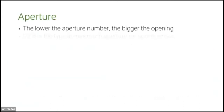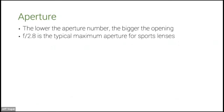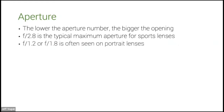The lower the aperture number, the bigger the opening. F2.8 is the typical maximum aperture for most sports lenses — all the lenses I own are 2.8 as large as they go. You'll often see F1.2 or F1.8 on portrait lenses, but not on big long sports lenses. The biggest aperture I've seen is a 0.95 — it's a manual focus lens from Nikon and it's like $15,000.